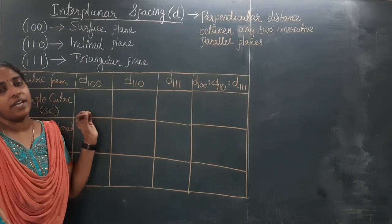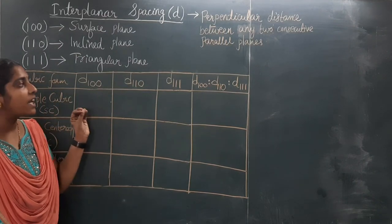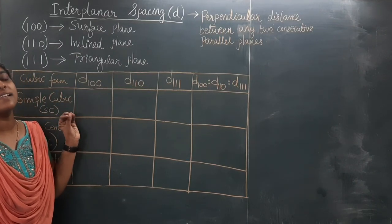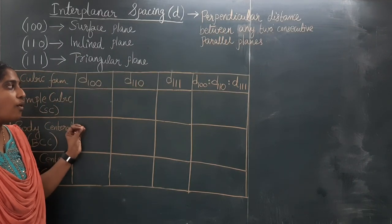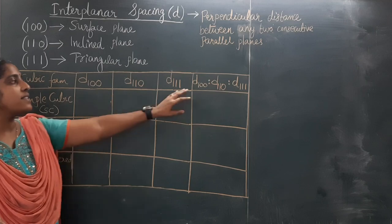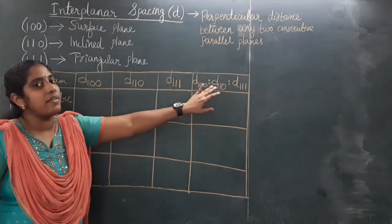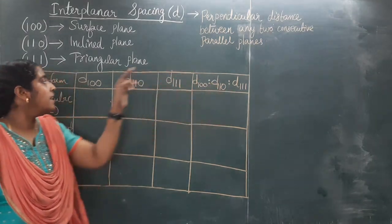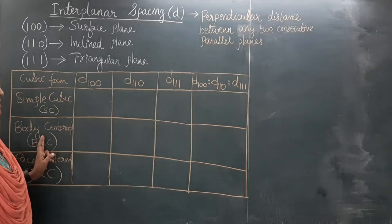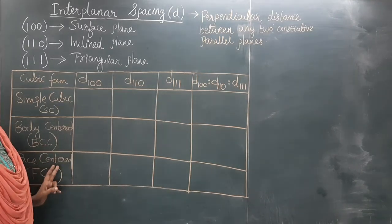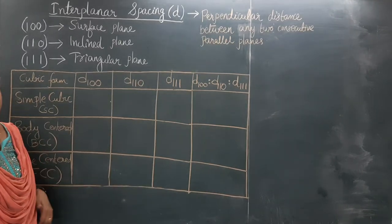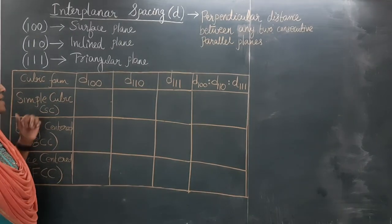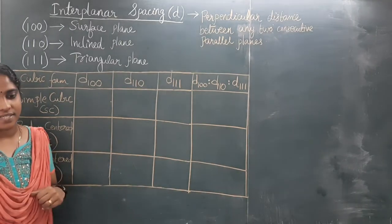Now, we can find out the ratio of the interplanar spacing of 100, 110, and 111 in the simple cubic, body centered cubic, and face centered cubic structure. First, we can go to the simple cubic structure.